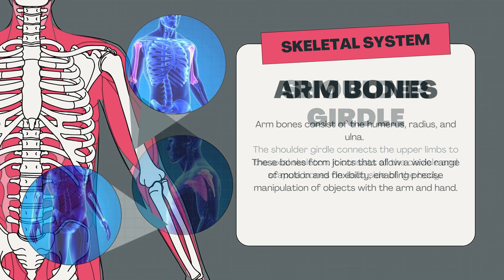There are eight carpal bones divided into two rows. The proximal row: 1. Scaphoid, 2. Lunate, 3. Triquetral, and 4. Pisiform. The distal row: 5. Trapezium, 6. Trapezoid, 7. Capitate, and 8. Hamate.